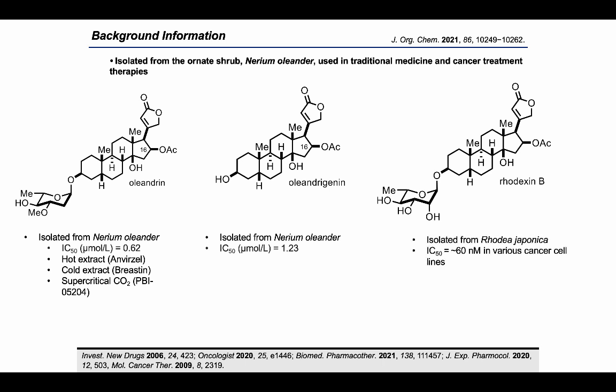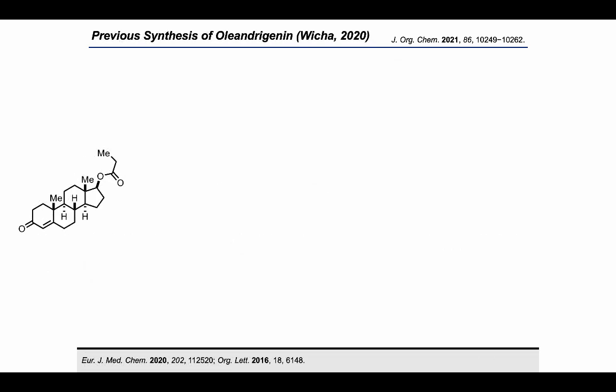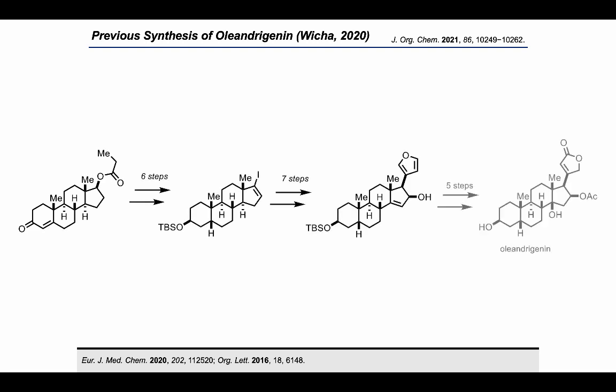While many recent studies have focused on developing concise approaches to cardiotonic steroids, to date there is only one reported synthesis of oleandrogenin by Wicha and co-workers. This synthesis relies on testosterone propionate as a starting material and is subsequently elaborated into oleandrogenin in 18 steps, featuring a late-stage C16 and C14 oxygenation installation.